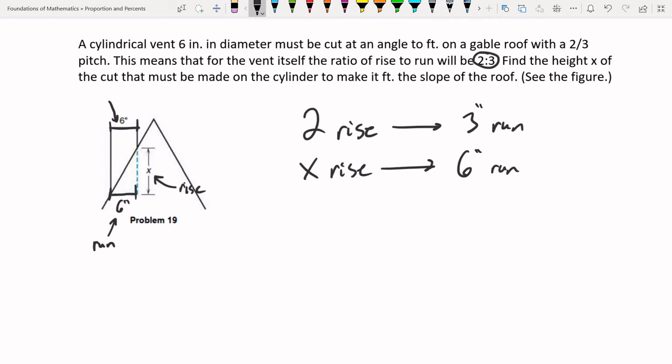The rise is going to be X goes to a run of 6 inches. These are all going to be in inches because that's the unit that's given to us. And now you can see that we have a rise and runs over each other, which means we can immediately make this into a proportion. Cross multiply and divide. 2 times 6 is 12. This equals 3 times X, which is 3X. Divide by 3. 12 divided by 3 is 4. X equals 4 and that's in inches as every other unit given was inches.